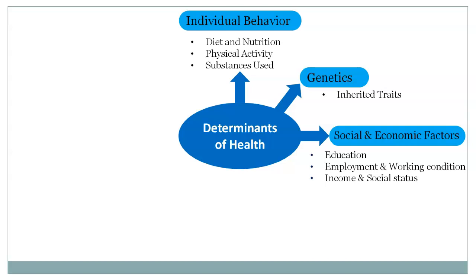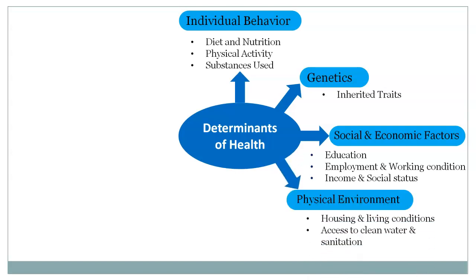Those individuals with prosperous and equitable distribution of wealth are considered the healthiest population. The next determinant is the physical environment, including housing and living conditions and access to clean water and sanitation. Quality and safety of living spaces determine health, and availability of clean water and proper sanitation is also a major determinant.